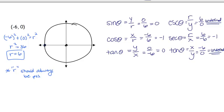You can have undefined values when looking at sine, cosine, tangent, cosecant, secant, and cotangent of points on circles. We hit that 15-minute mark — we are done with our video for today.